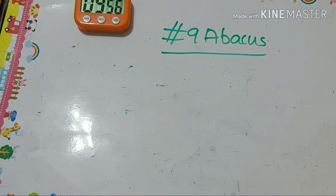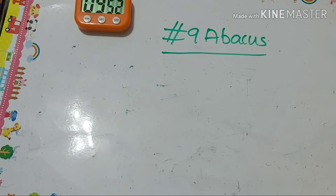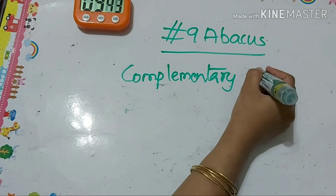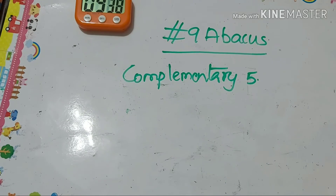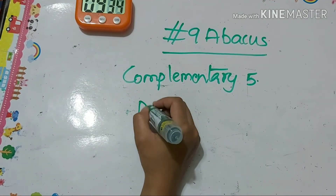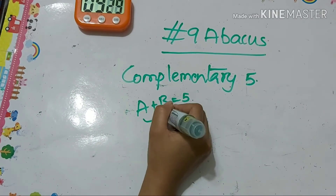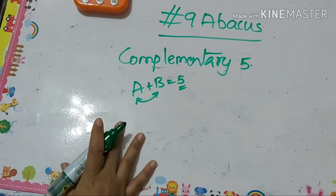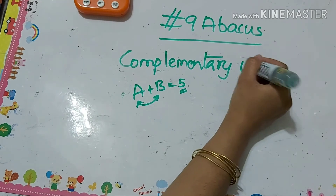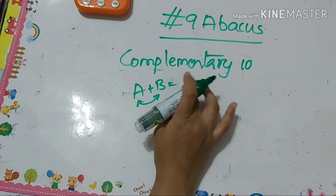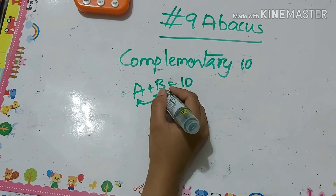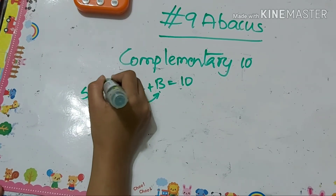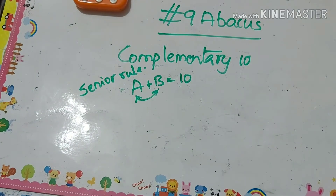Hello viewers, welcome back to my channel. In this video you are going to learn complementary numbers with respect to 10. In an earlier class we saw the complementary method with respect to 5, where two numbers a and b are friends when their sum is 5 — that is the small friend method. Similarly, in complementary with respect to 10, also known as the big friend method or senior friend method, when you add two numbers and the sum is 10, then a is a friend of b and b is a friend of a.